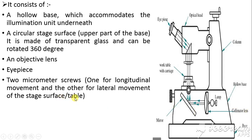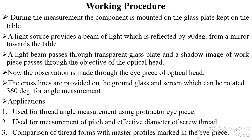The tool maker's microscope consists of a hollow base with an illumination unit, a circular transparent glass stage on which the component rests (rotatable through 360°), an objective lens, an eyepiece, and two micrometer screws — one for longitudinal movement and one for lateral movement. During measurement, the component is mounted on the glass plate. A light beam reflected 90° from a mirror passes through the transparent plate and forms a shadow image through the objective. Measurements through the eyepiece include thread angle using a protractor eyepiece, pitch and effective diameter of the screw thread, and comparison of thread forms with master profiles.